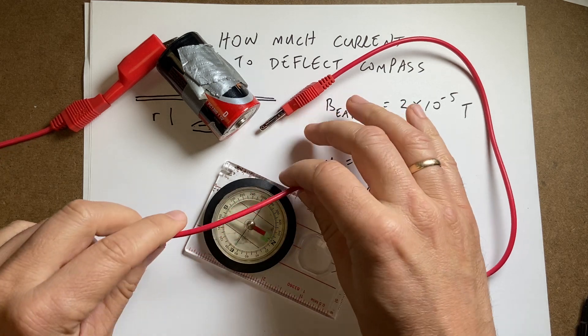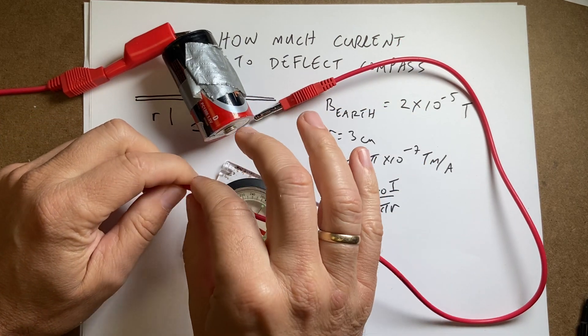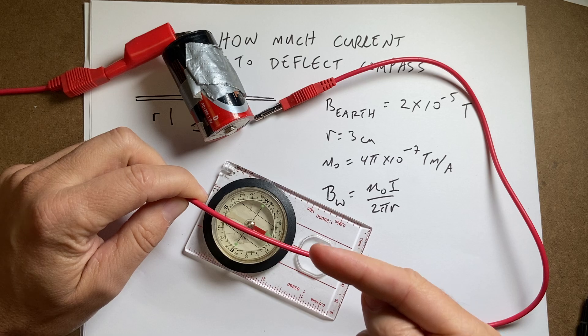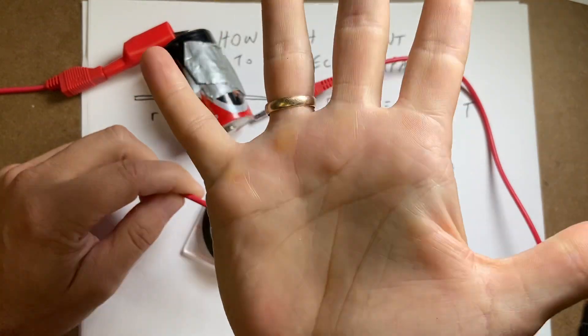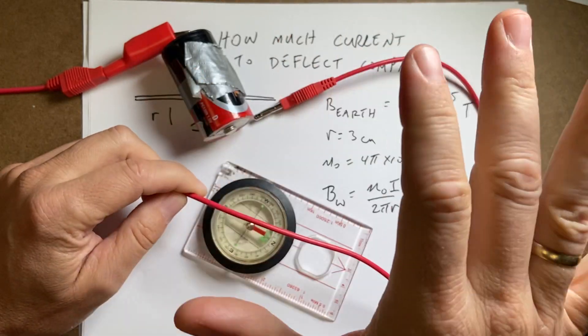So what is going on is the current is going through the wire. Actually, in this case, it's going that way. I can use my right hand. This is my right hand, see? My right hand rule. If I put my thumb in the direction of the current,